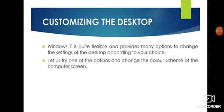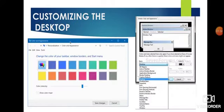Windows 7 is quite flexible and provides many options to change the settings of the desktop according to your choice. You can change the desktop background, you can change the desktop screensaver. Today we will learn how we can change the color scheme of the computer, using the window color and appearance window.